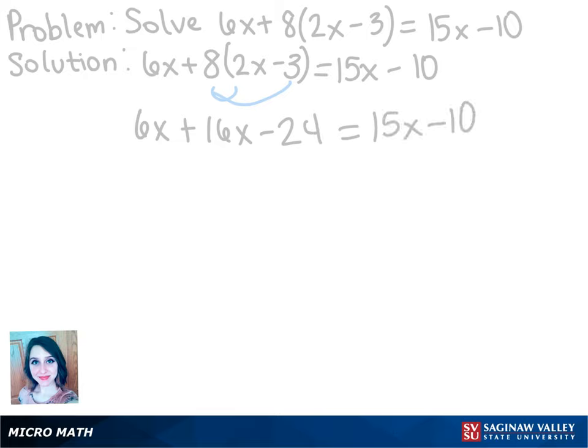Now, as you can see, we have two x terms on the left side of the equation that we can combine. So we get 22x minus 24 equals 15x minus 10.